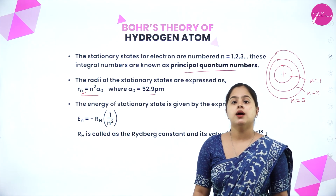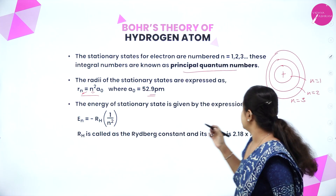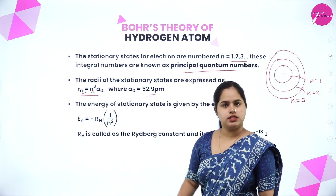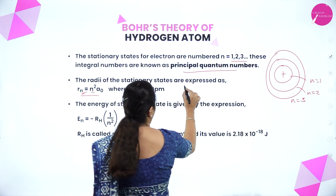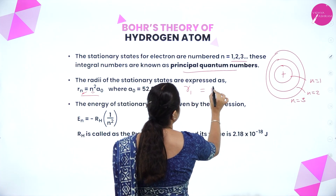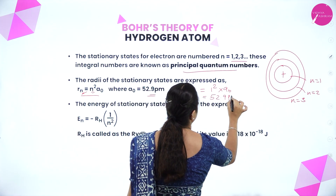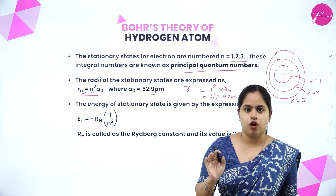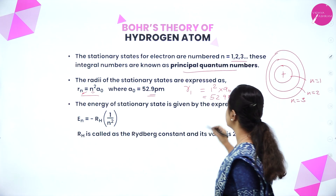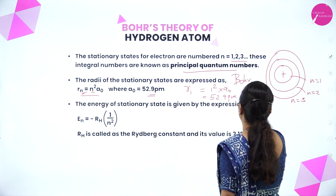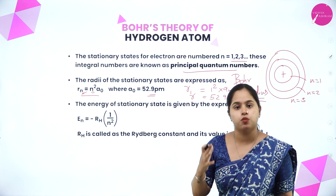The value for a₀ is 52.9 picometers, and N corresponds to the shell or the principal quantum number — N = 1, 2, 3. For the first energy level, R₁ = 1² × a₀ = 52.9 picometers. This radius, where N = 1, is called the Bohr radius. So R = 52.9 picometers is the Bohr radius.